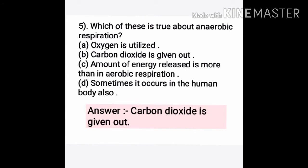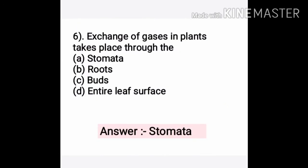Question five: Which of these is true about anaerobic respiration? A. Oxygen is utilized — this is incorrect for anaerobic. B. Carbon dioxide is given out — this is correct; in organisms like yeast and bacteria, carbon dioxide is released. C. Amount of energy released is more than aerobic — no, anaerobic releases less energy. D. Sometimes it occurs in human body also. Your correct answer is B: carbon dioxide is given out.